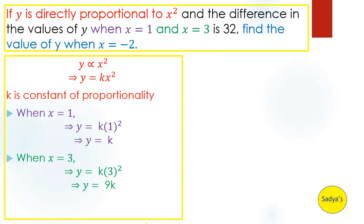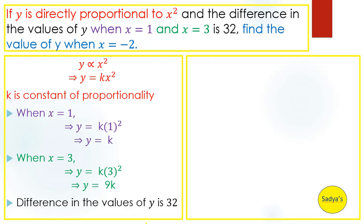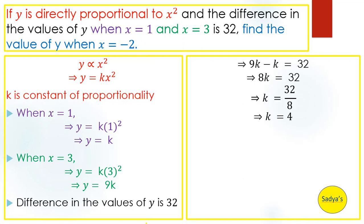Now that we have both values of y, let's use the second information written in black: the difference in the values of y is 32. Since 9k is larger than k, we subtract k from 9k: 9k minus k equals 32. Since 9k minus 1k equals 8k, we get 8k = 32. Dividing both sides by 8, k = 32 divided by 8, which simplifies to 4. So we have found the value of the constant k.